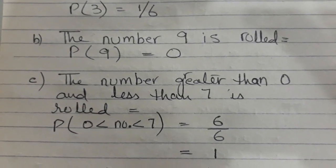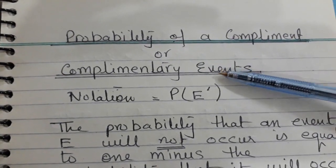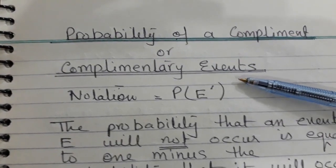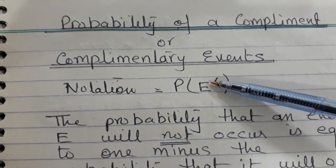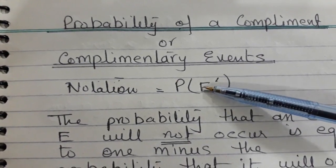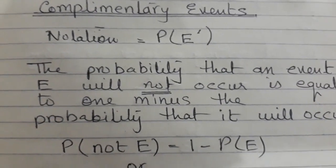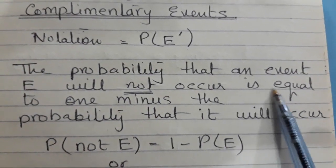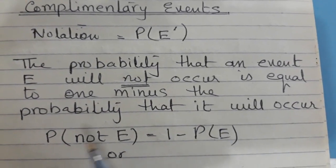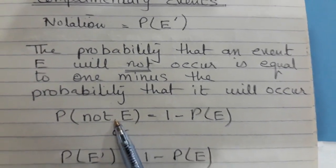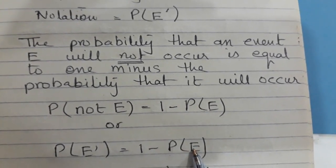Now we will look at the probability of a complementary event. The notation for the complement of event E is E′ (E prime). The probability that an event will NOT occur equals 1 minus the probability that it will occur: P(E′) = 1 − P(E). Since 1 represents 100% probability, subtracting the probability of an event gives the remaining probability of it not happening.